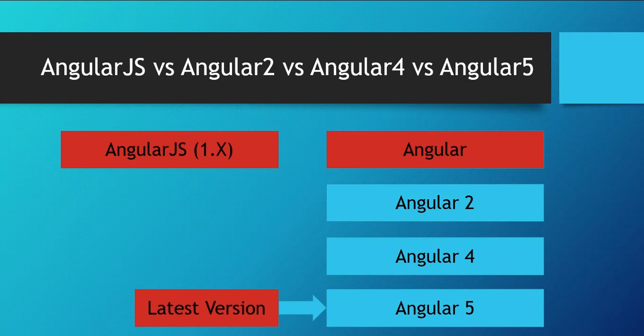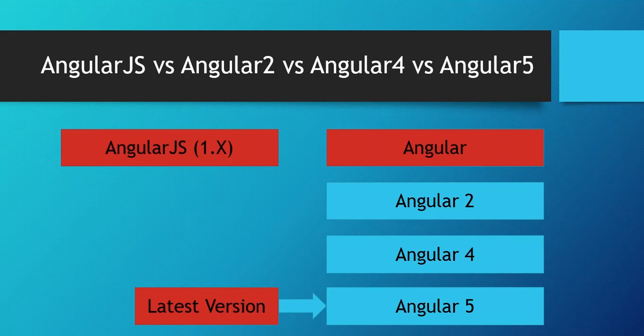So there is no need to be confused about Angular versions. We have two major versions: Angular and AngularJS. Angular 5 is simply the latest version of Angular. This is all about Angular version history. Thank you for watching this video. Have a great day.